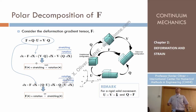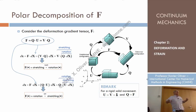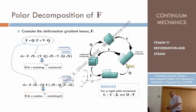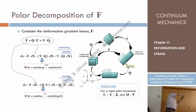Alternatively, consider the decomposition F = Q times U. Then differential dx = Q times U times dX. Grouping the last two terms, I first apply U — which is responsible for the stretches and all the strain measures — and then to that result I apply Q, which is a rotation. The final result is the same. So the deformation of a body can be decomposed either as a rotation followed by a deformation, or as a deformation followed by a rotation. Any constant displacement does not change anything.